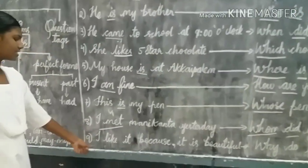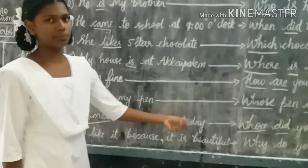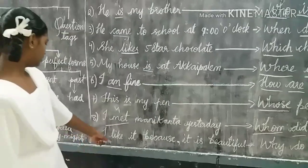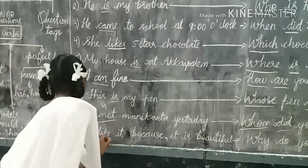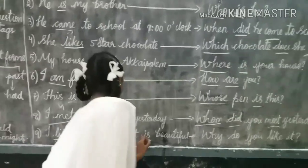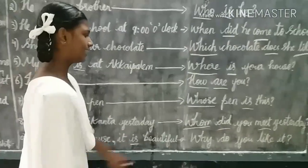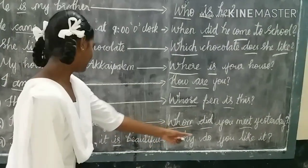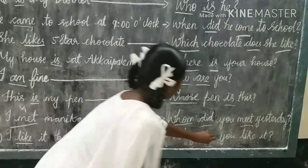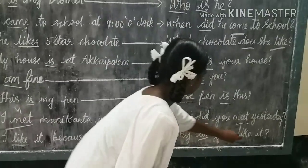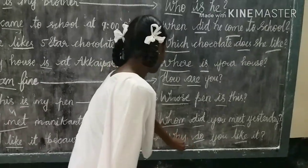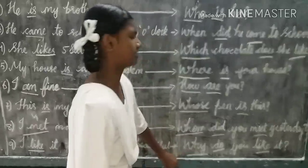The ninth example is: I like it because it is beautiful. Here 'like' is a verb form. The WH question used here is 'why,' as we are asking for a reason.